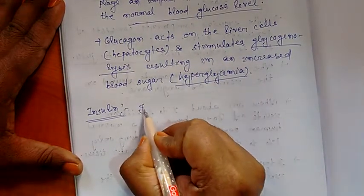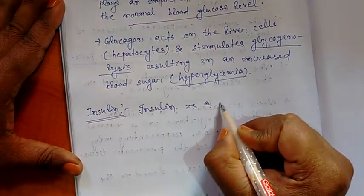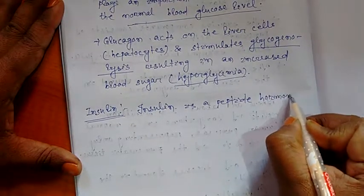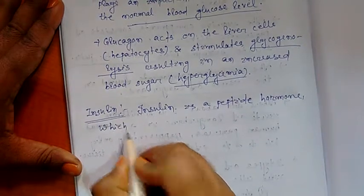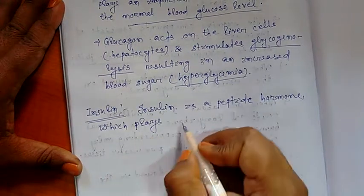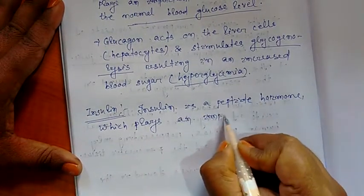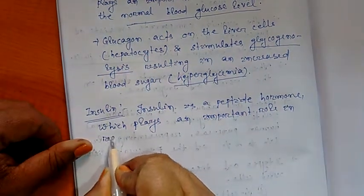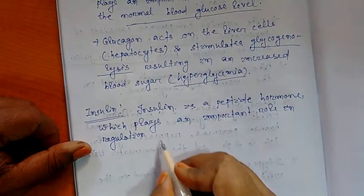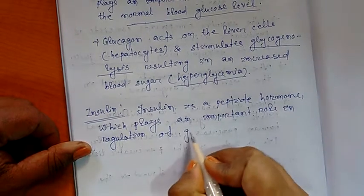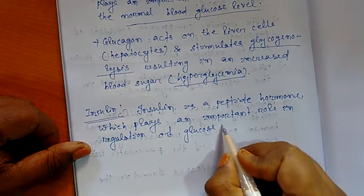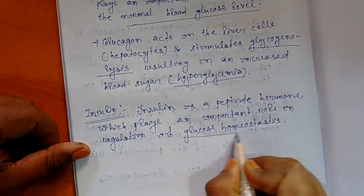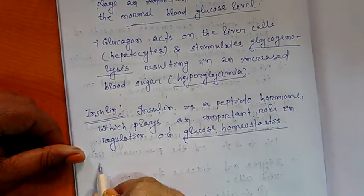Insulin is also a peptide hormone which plays an important role in regulation of glucose homeostasis. That is, the constant level of glucose in our blood is maintained by insulin.